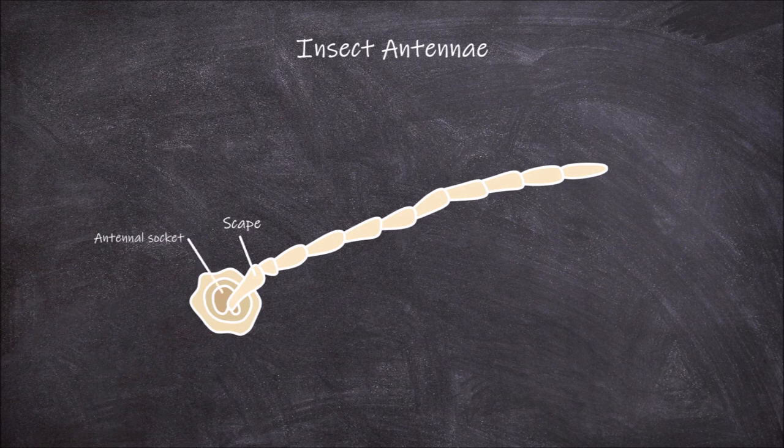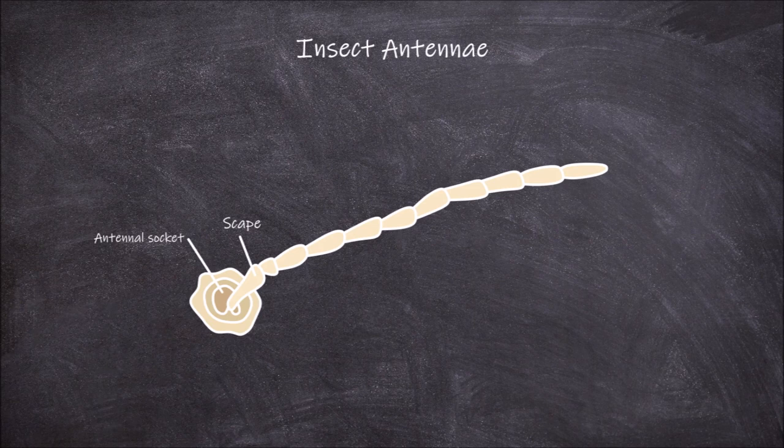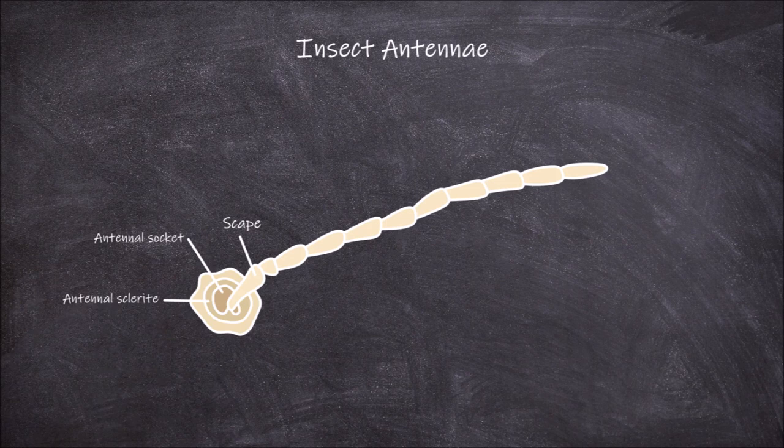The scape sits in an antennal socket on the head of the insect, which is closed off by a membrane. The socket is made up of the antennal sclerite and separated from the sclerites of the head by the antennal suture.